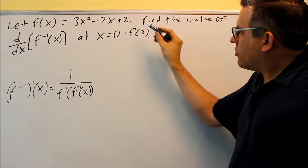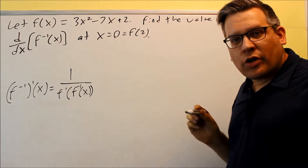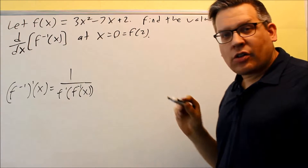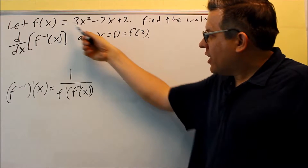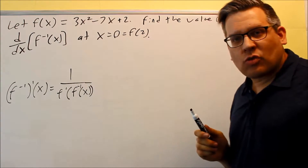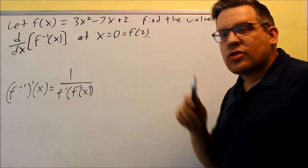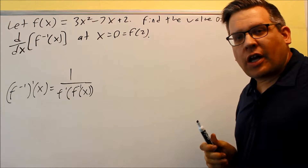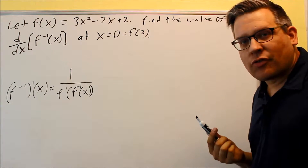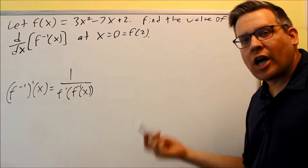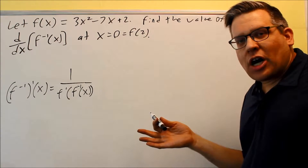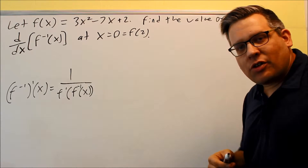Unfortunately, we're going to run into a problem on this one, because if we try to do that algebraically, I would have y equals this function, I would switch x and y, and then I would get two y's, and we don't know how to solve for that if there's two variables. So we can't actually solve for y by itself, and because of that, we can't do this problem the same way as the others.